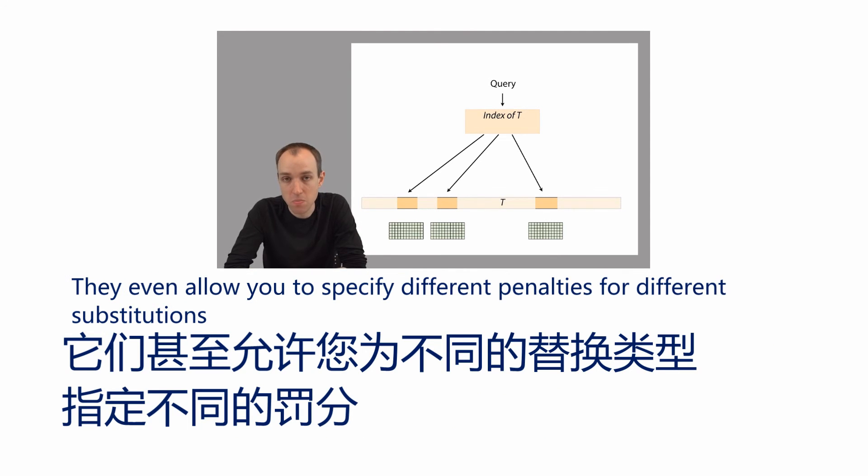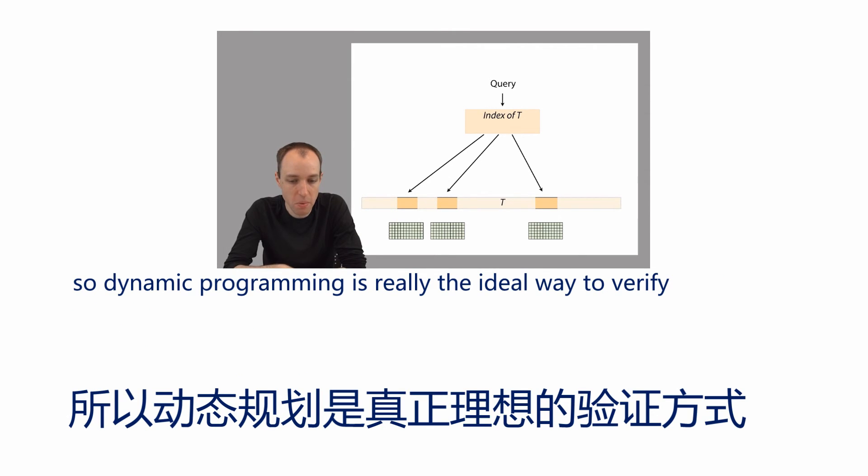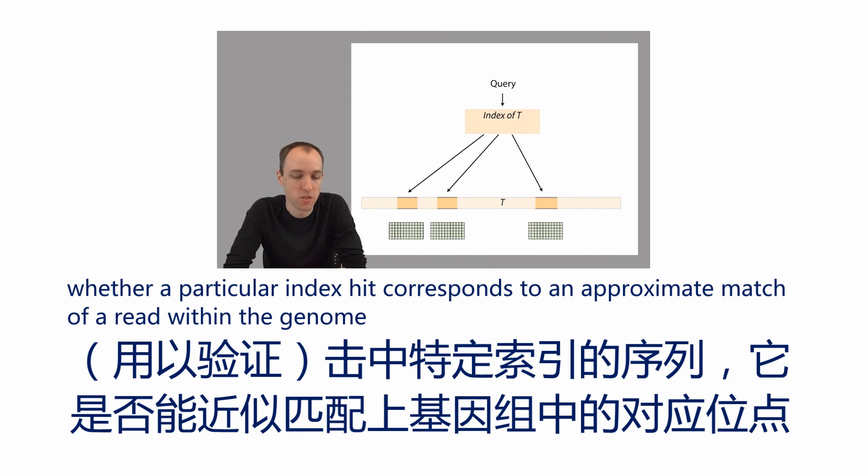They even allow you to specify different penalties for different substitutions. Dynamic programming is really the ideal way to verify whether a particular index hit corresponds to an approximate match of a read within the genome.